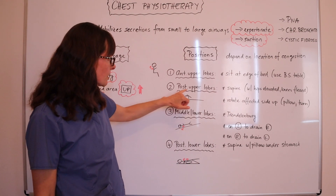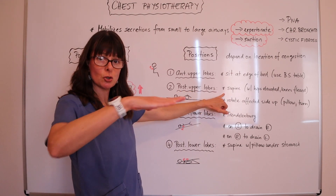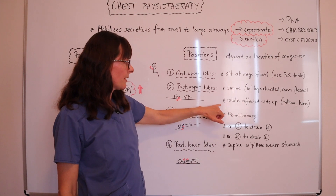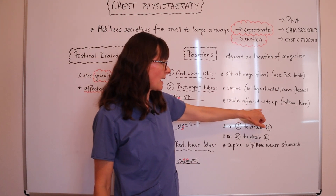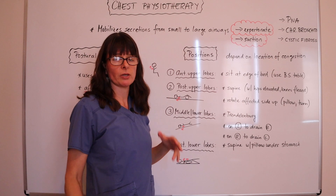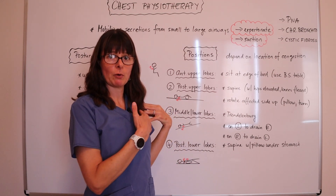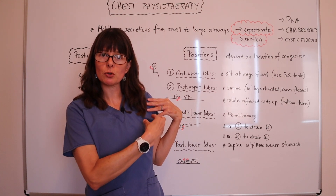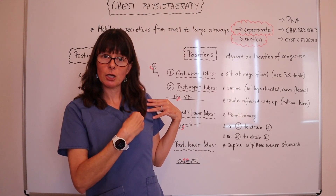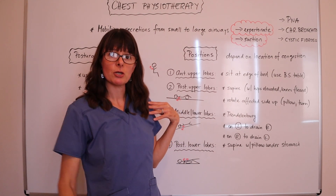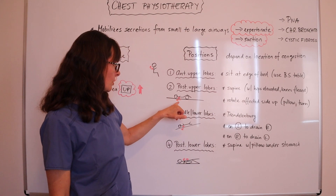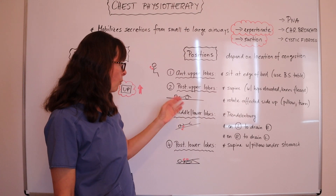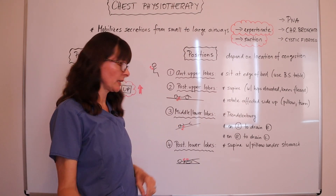If it's the posterior upper lobes, we want to have the patient in a supine position — flat in bed, maybe with the hips elevated and knees flexed — and then rotate the affected side up on a pillow. So if it is their left side that's affected, we rotate that side up. With gravity, the secretions will move from those smaller airways on the affected side into the larger airways, and the patient can then spit them out — mobilizing secretions away from the lower lung fields up to the mouth.